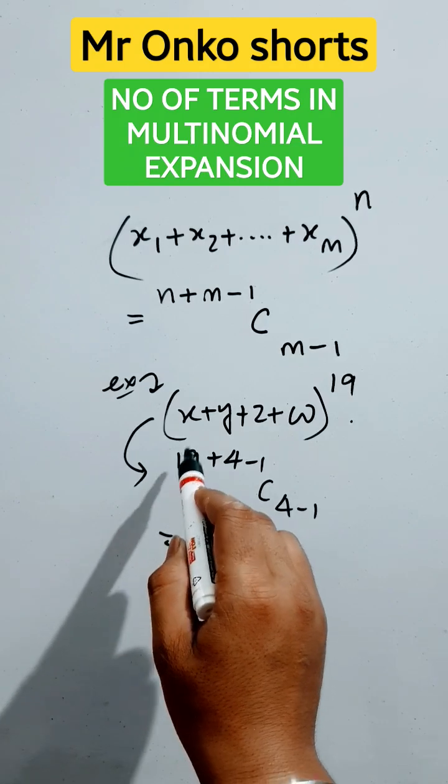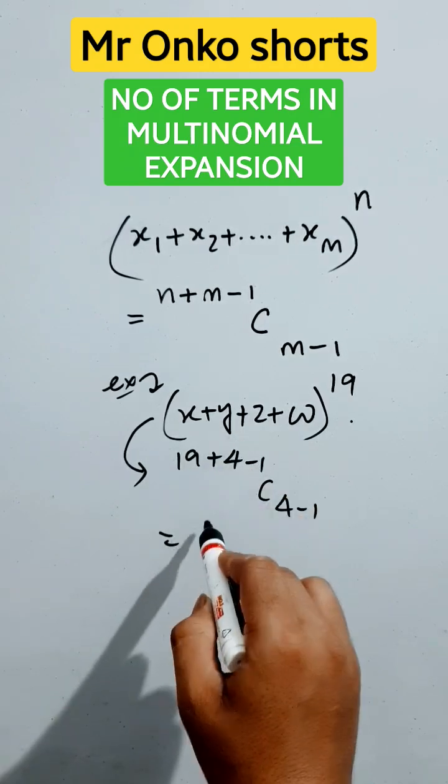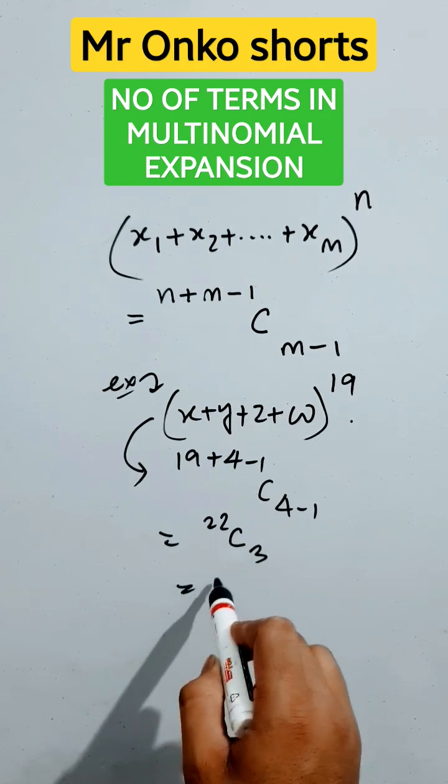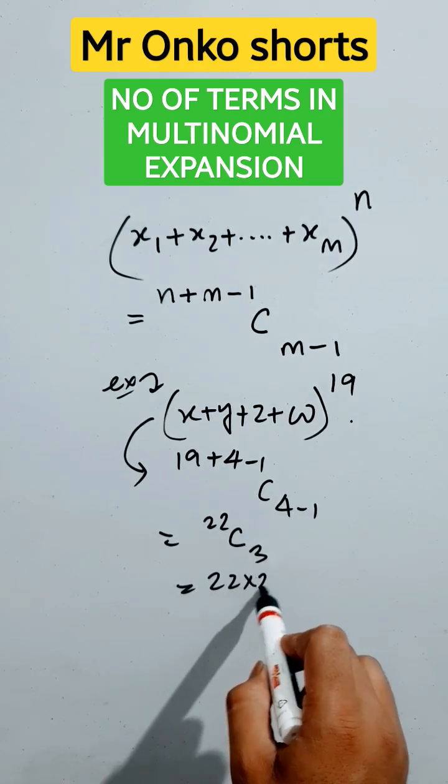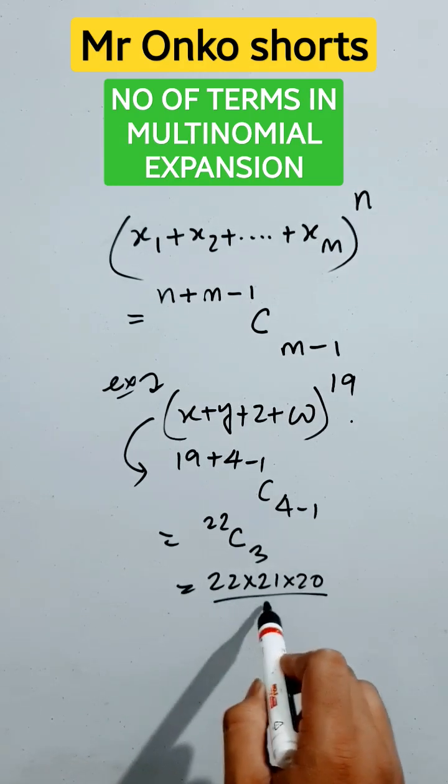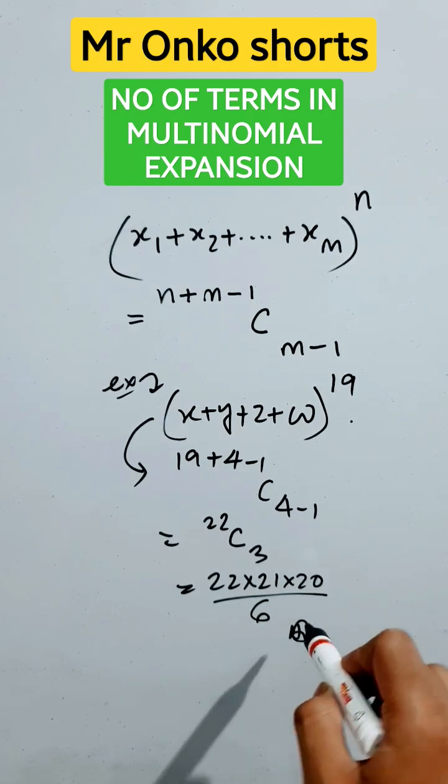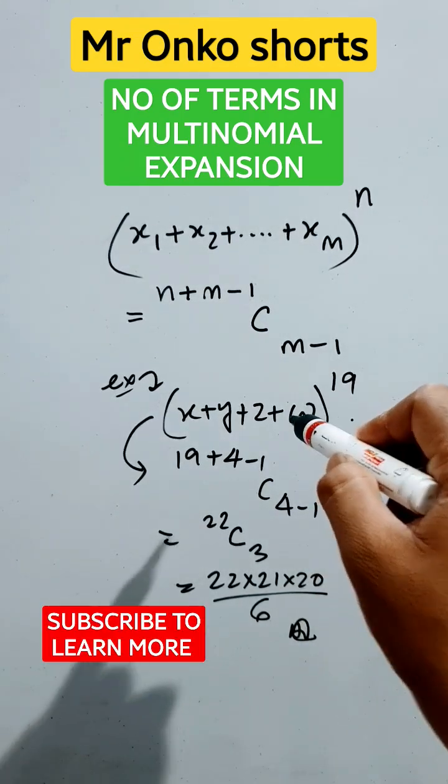It will be 19 minus 1 that is 18 plus 4, 22 c 3. So, the answer will be 22 into 21 into 20 by 6. This is the answer. This is the number of terms in this part. Thank you.